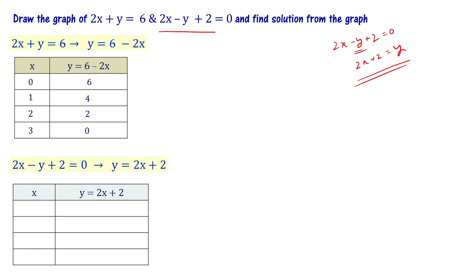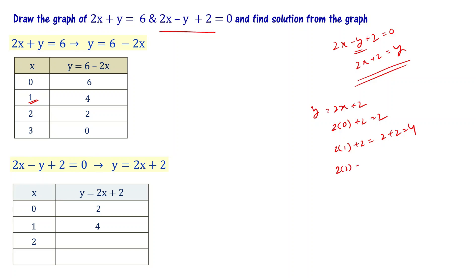For the second equation, y equal to 2x plus 2: when x equal to 0, y equals 2 times 0 plus 2, which is 2. When x equal to 1, y equals 2 times 1 plus 2, which is 4. When x equal to 2, y equals 2 times 2 plus 2, that is 6. When x equal to 3, y equals 2 times 3 plus 2, that is 8.